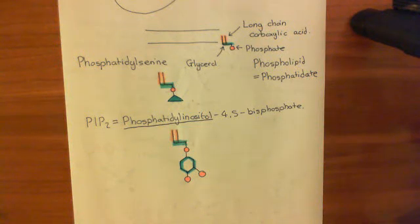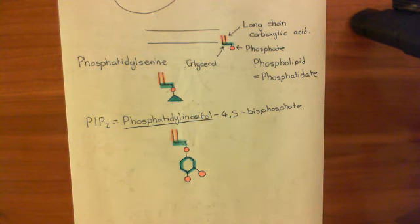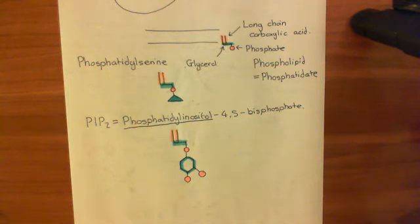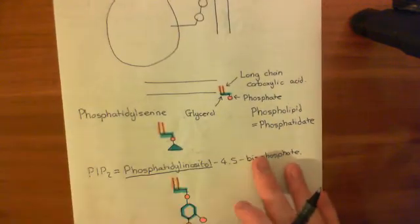Welcome to this next video on the function of synaptotagmin. So far, we've seen that a synaptic vesicle can dock at the presynaptic membrane through the formation of core SNARE complexes which hold it at the membrane. When an action potential propagates along the axon and arrives in the axon terminal, it allows calcium to move through N-type and P/Q-type voltage-gated calcium channels. This calcium will bind to the C2A and C2B domains of our synaptotagmin molecule.